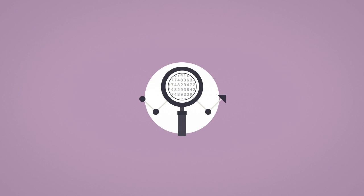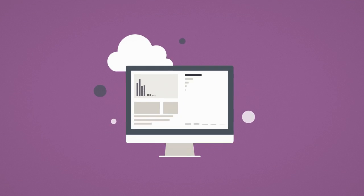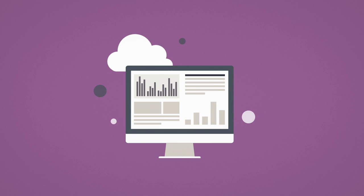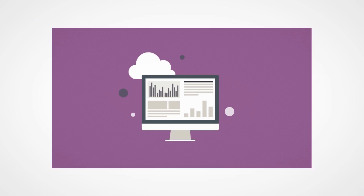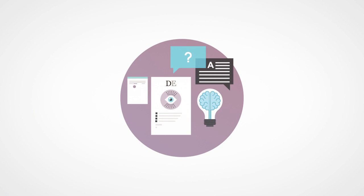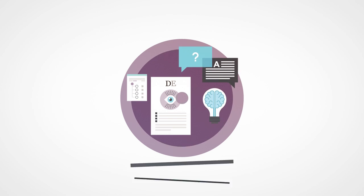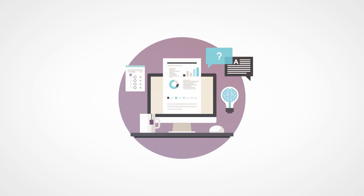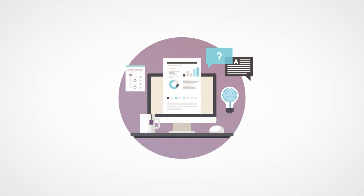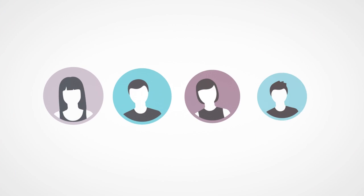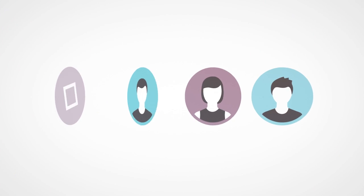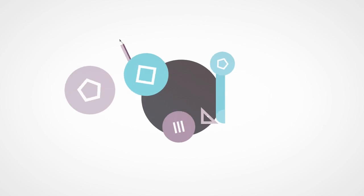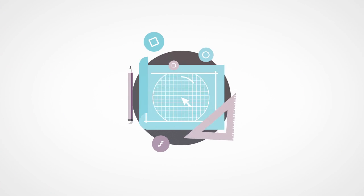We analyse all this data and present them on a single platform — we call it the Data Board. The Data Board contains all of our developer economics research, visualised into interactive charts. Here, you'll find all the answers you need for understanding who developers are, how they make decisions and what they'll do next.